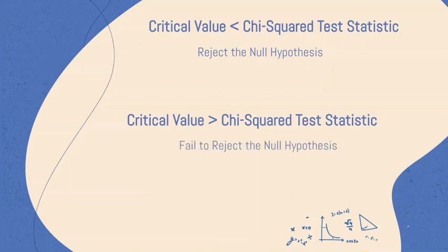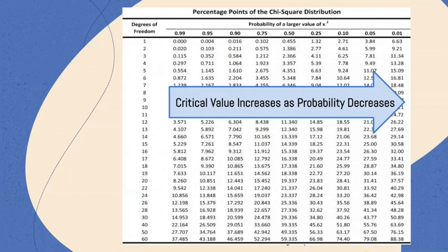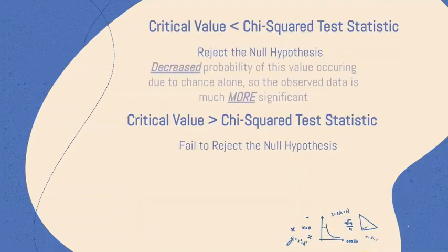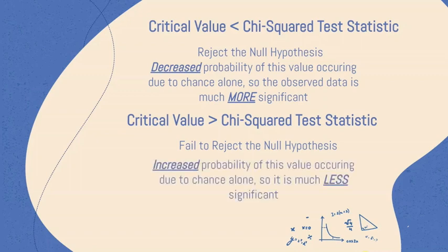This makes sense because if you see on the table, the greater the critical value is, the less the probability becomes. So there is a decreased chance of us achieving those higher critical values due to chance alone, and if our outcomes exceed it, then our findings are even more significant, enough to reject the null hypothesis. On the other hand, a smaller test statistic in comparison to the critical value means that we have a greater probability of what we observe occurring due to chance alone, and so there isn't enough convincing evidence or significant evidence for us to disregard the null hypothesis.